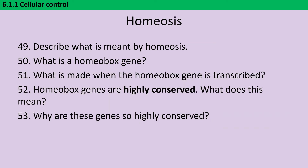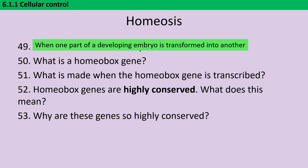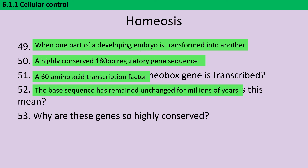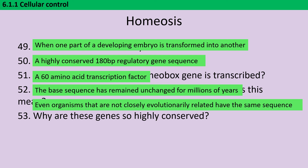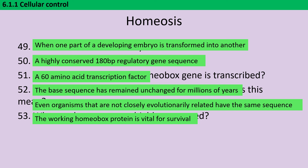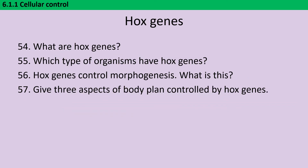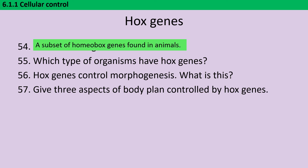When an embryo is developing and one body part erroneously develops as a different body part — for instance, where fruit flies have extra legs coming out of their head instead of antennae — that's homeosis. A homeobox gene is a highly conserved transcription factor gene which is always 180 base pairs long and codes for a 60 amino acid transcription factor. When we say it's highly conserved, we mean the base sequence hasn't changed for millions of years, so even organisms that aren't closely related still have the exact same sequence. These genes are so highly conserved because if they weren't, everything would die — the working homeobox protein is absolutely vital for survival, so any mutation means the mutant doesn't survive and the mutated gene is never passed on. Hox genes are a subset of homeobox genes found only in animals — all Hox genes are homeobox genes, but not all homeobox genes are Hox genes.